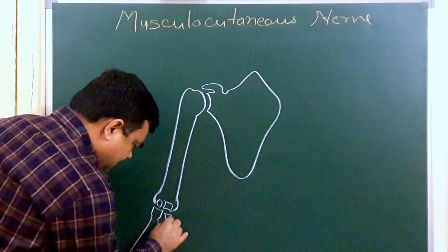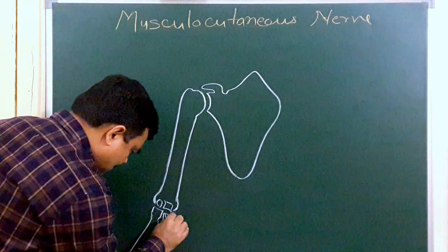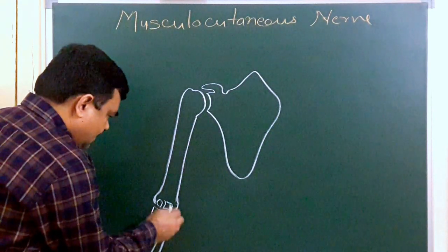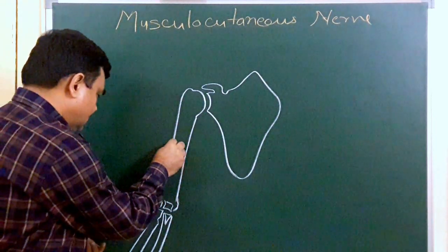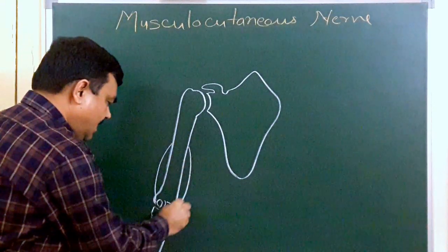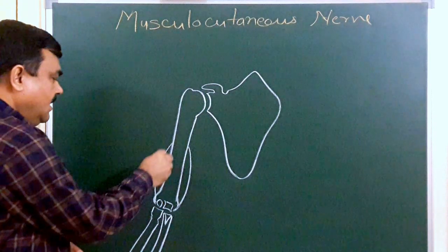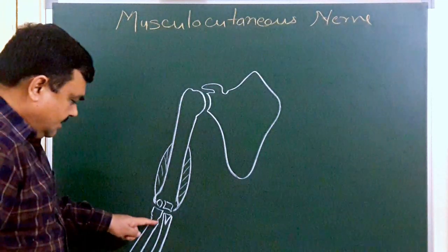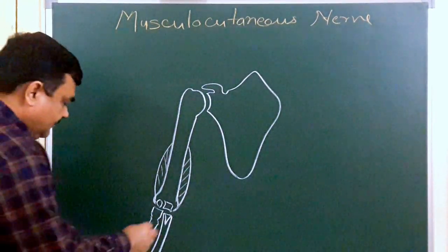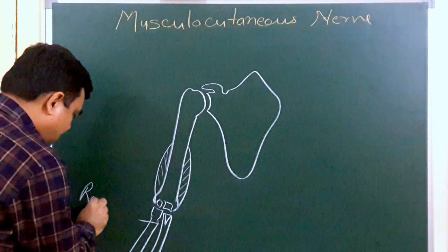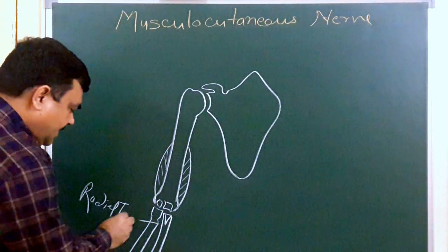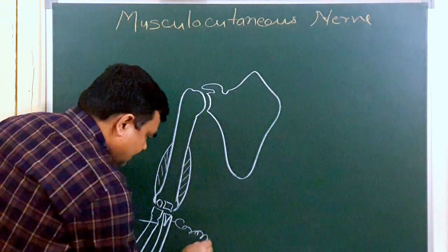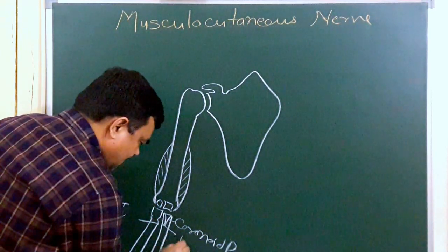This is radius and this is ulna. Here is the lateral and medial intermuscular septum — this is the lateral intermuscular septum and here is the medial intermuscular septum. This is the radial tuberosity, and here is the ulnar tuberosity. Here is the coronary process.